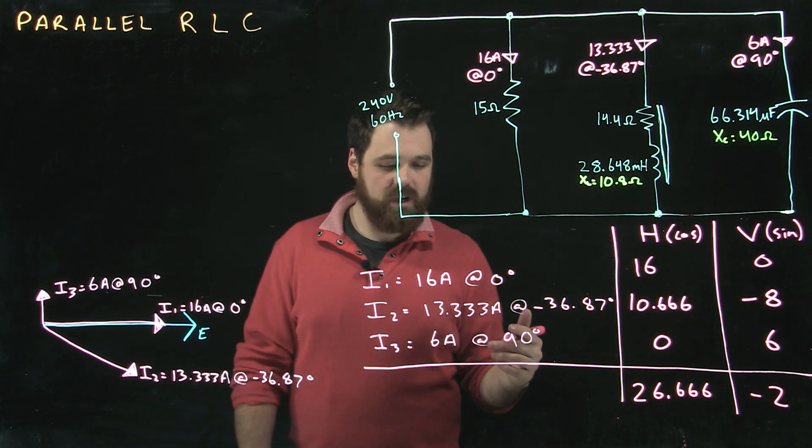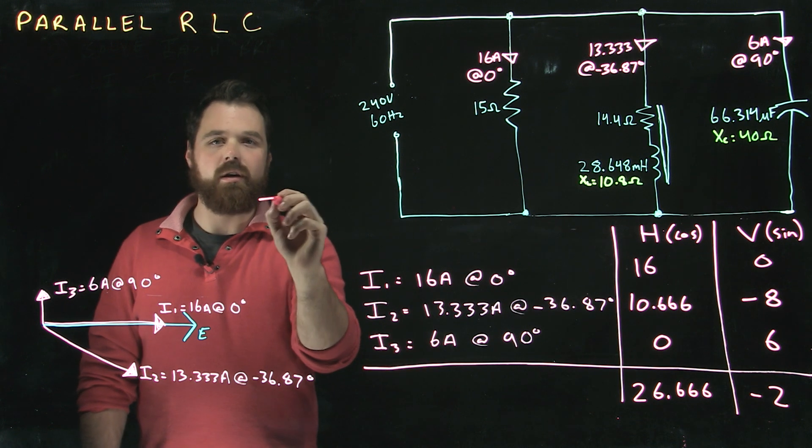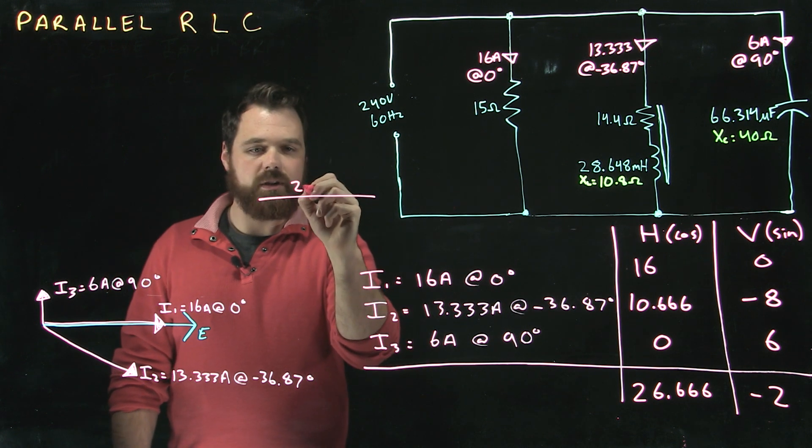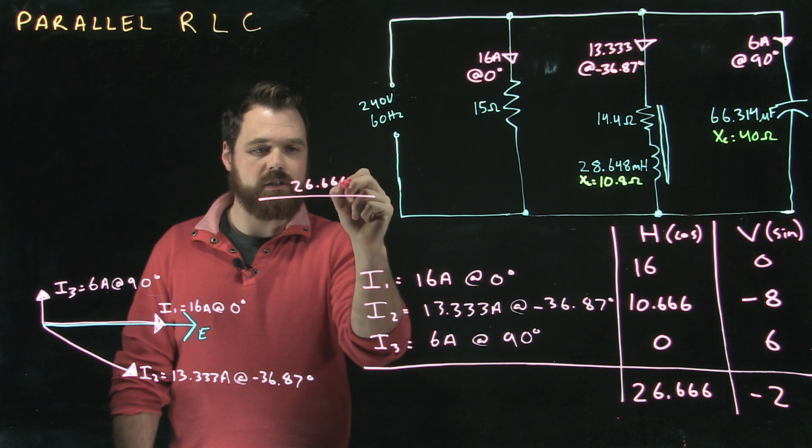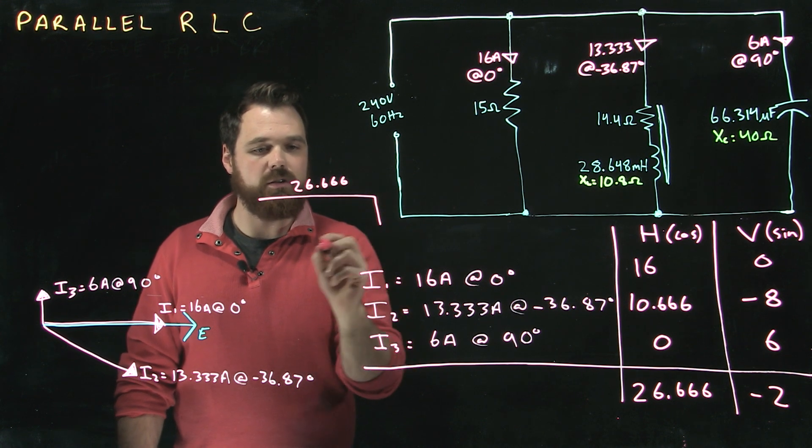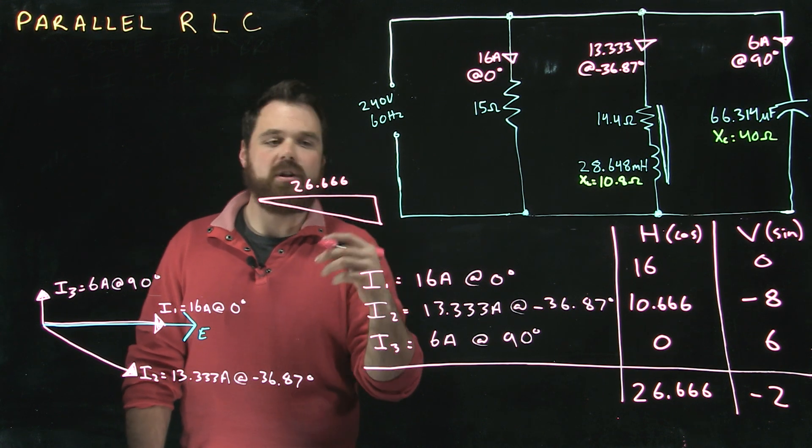So what we've done is we've taken all that info and said okay, if I'm starting here I'm going over 26.666 and then going down 2. So we're making our own little current triangle.